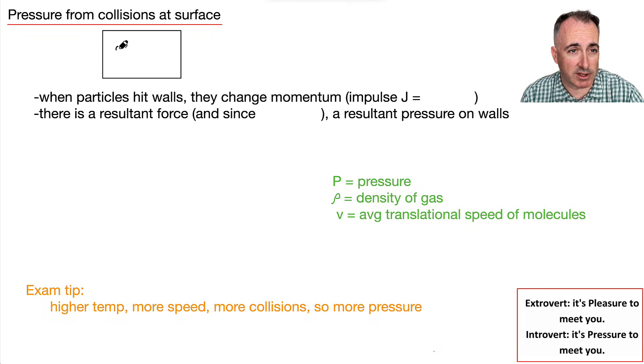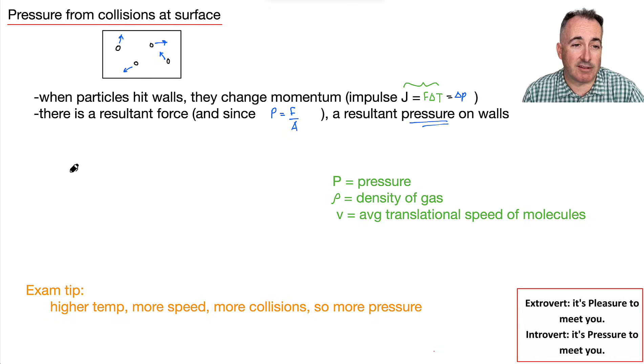Let's consider what happens with the pressure with these collisions at the surface. When particles hit the walls, they change direction. That means they're going to change momentum. Remember, we have this equation: J equals F delta T. This is from your data booklet. But it's also equal to delta P, a change in momentum. So if you change in momentum, you're also having a resultant force. And since we had this equation pressure equals force over area, if there is some kind of force, then there must be a pressure. So there's a resultant pressure on the walls.